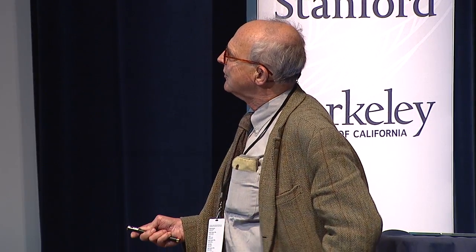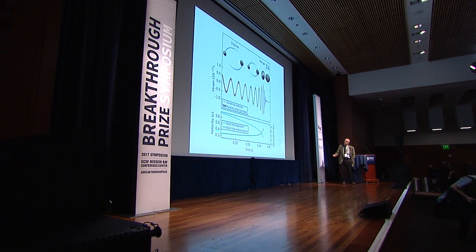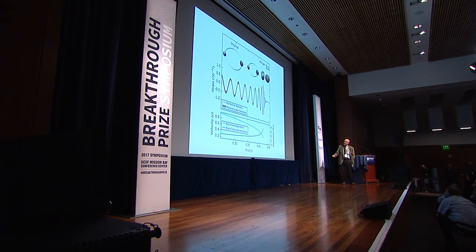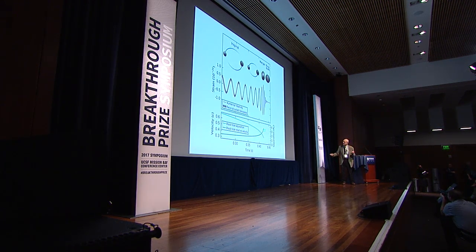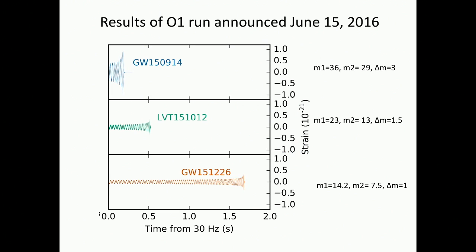We've never seen black holes in pairs before. Here's a curve showing the relative velocity of these two as they're going around, and then when they hit each other — about a third the velocity of light for objects that weigh 20 to 30 times the mass of the Sun. At the endpoint when they smash into each other, it's about a little over half the velocity of light. You're almost doing particle physics with these gigantic astrophysical objects.